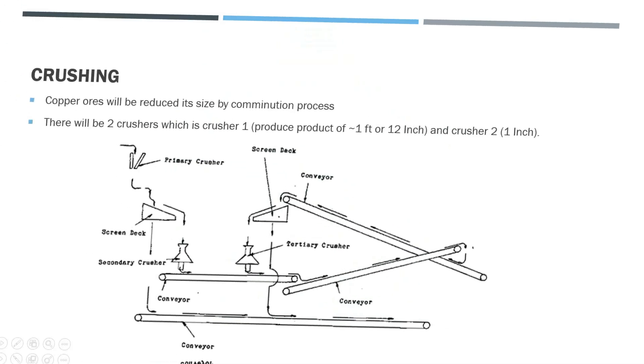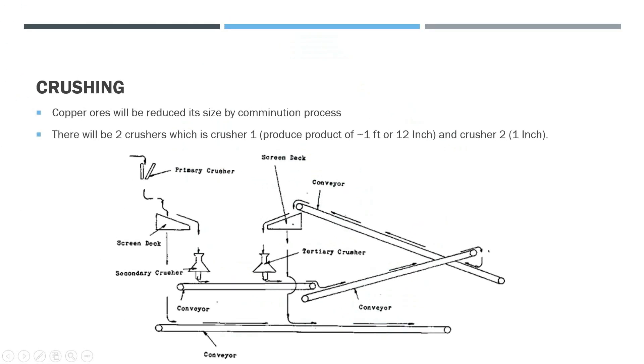For the crushing part, we will reduce the size of the product that we want. For that, there will be a crusher one and crusher two. Basically, crusher one, we will use a gyratory crusher and we will make a screening to separate the size that we want. Crusher two, there will be a tertiary crusher. The product that we want will be resized to until one inch.